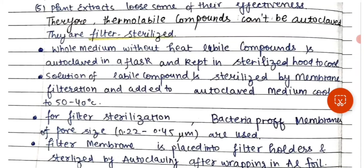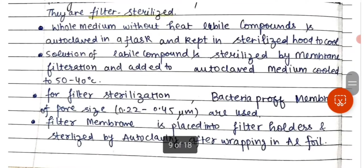The solution of labile compounds is sterilized by membrane filtration and added to the autoclaved medium cooled to 40 to 50 degrees Celsius. Heat-labile compounds that are sensitive to heat — which we cannot autoclave with dry heat or moist heat — must be filtered. For such samples, filtration is required.